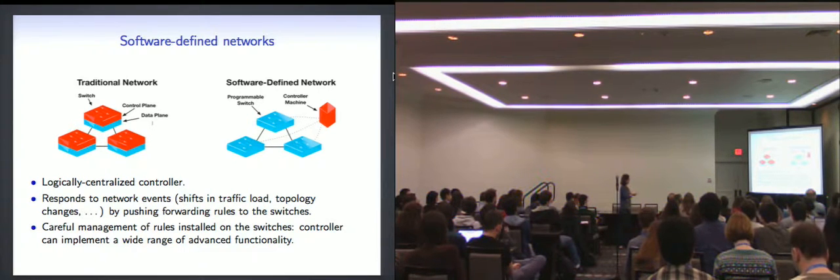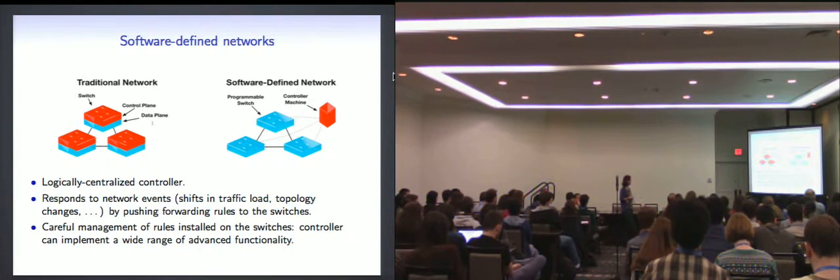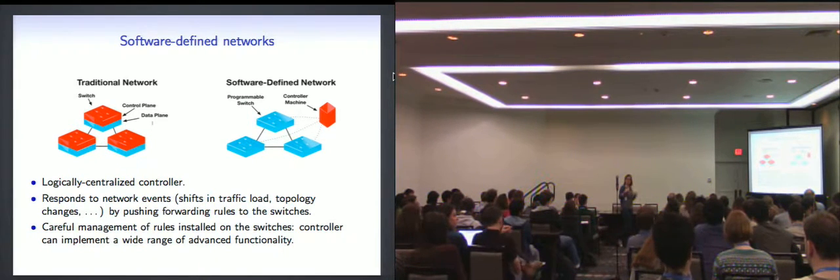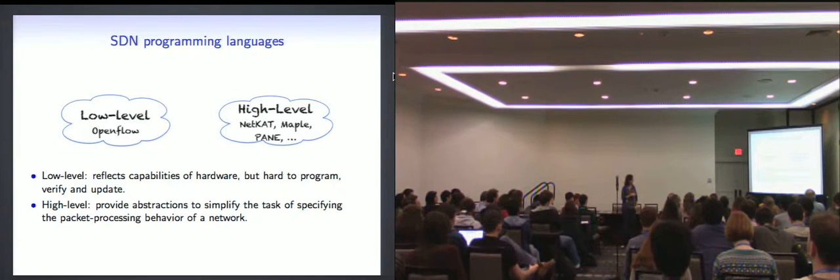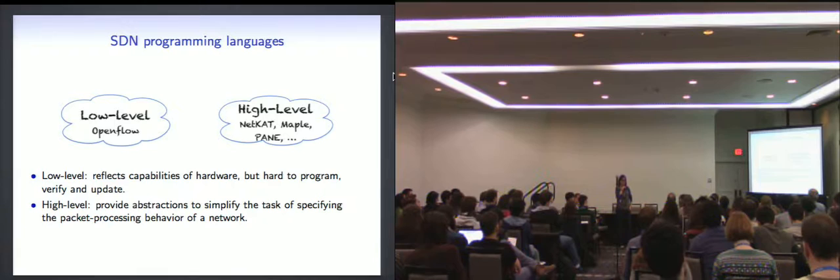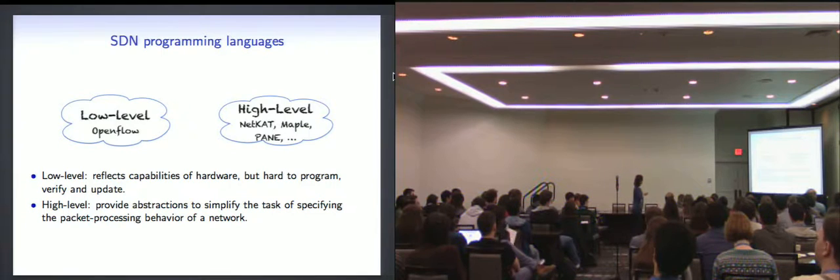So software-defined networks is this new paradigm in networking from a decade ago, I would say by now, where the control and data planes in the network are taken apart. And there's a centralized controller that basically has a global view of the network and can react to events in the network. So if a link is down and so on, it can change the policy. And a lot of work has been devoted in the last few years on devising programming languages to actually program this controller in a high-level way. Some of that work has been done at Cornell. There's this project called Frenetic between Cornell and Princeton and I think some other place. And the core language of Frenetic is called NetKAT.